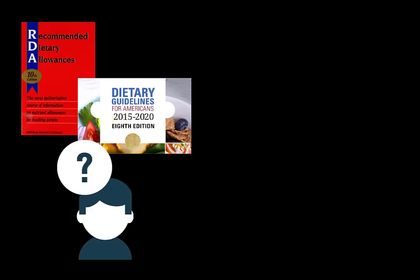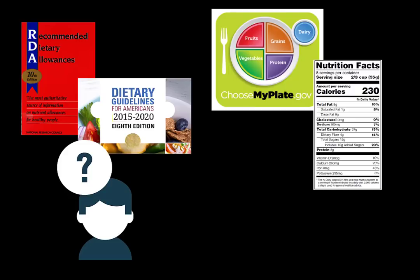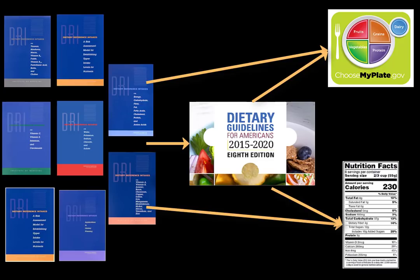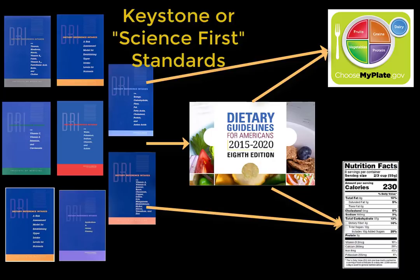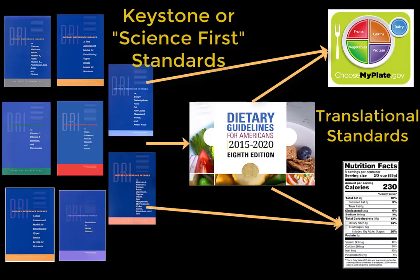When I ask an introductory nutrition class if they've ever heard of RDAs or the dietary guidelines, I might get one or two hands up out of 100 to 200 students. But when I ask the same group if they've ever heard of MyPlate or the daily values on food labels, I get almost 100% awareness. This graphic shows how the DRIs and the dietary guidelines for Americans are the basis for our more commonly known standards — MyPlate and the daily values on food labels. The DRIs and the dietary guidelines are considered the keystone standards, or the science-first standards. MyPlate and the daily values are called translational standards, specifically designed to translate the DRIs and the dietary guidelines so the average consumer can understand and use them.